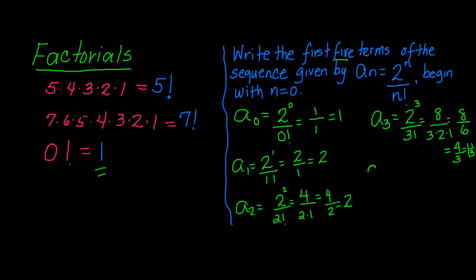And for the 5th term, remember they said find the first 5 terms of the sequence, this would be 2 to the 4th power over 4 factorial. So that equals 16 over 4 times 3 times 2 times 1, which is equal to 16 over 24, because 4 times 3 is 12 times 2 is 24. We can reduce this to lowest terms. We have a common factor of 8, that will give you 2 over 3.